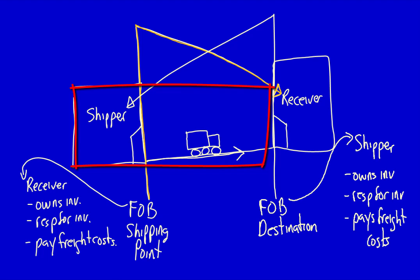If product is shipped FOB destination — free on board until it arrives at the receiver's location — the shipper owns the inventory while it's on the truck. If it's damaged in transit, the shipper is responsible for replacing it, plus the shipper pays all the freight costs. That's why when I draw the line for FOB destination, the arrow is pointed at the shipper because it's the shipper's problem while it's in transit. FOB shipping point — it's the receiver's problem while it's in transit.